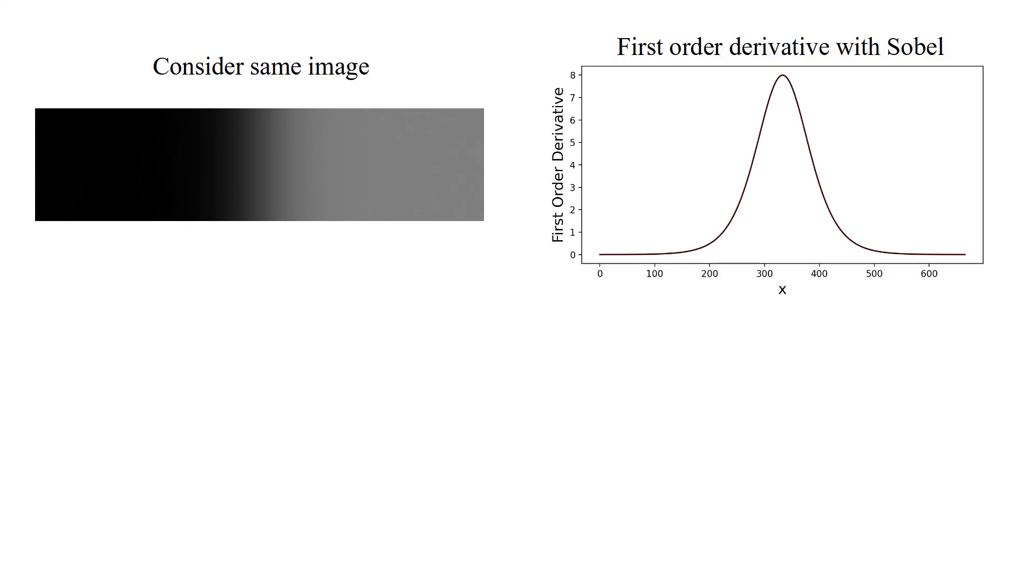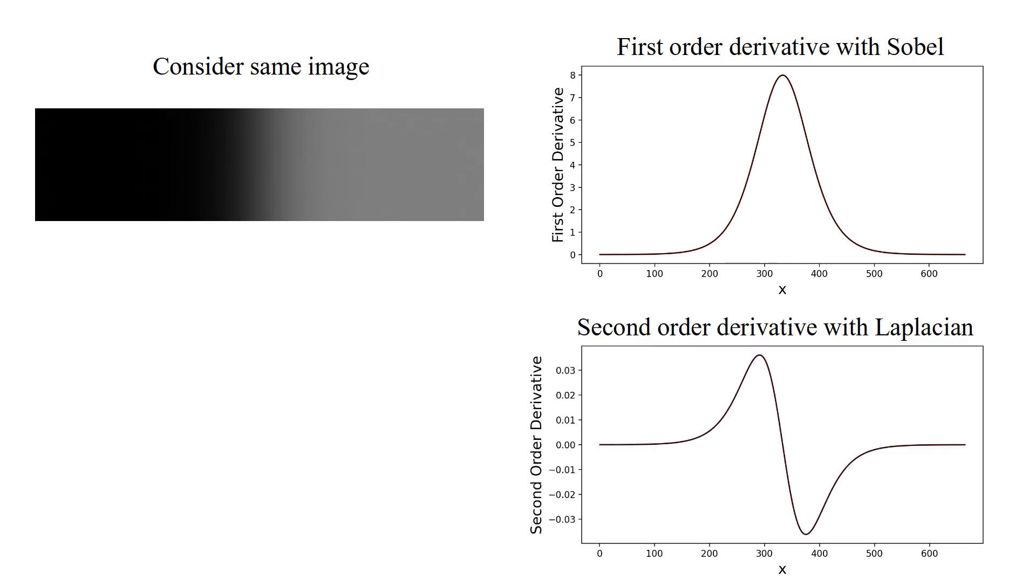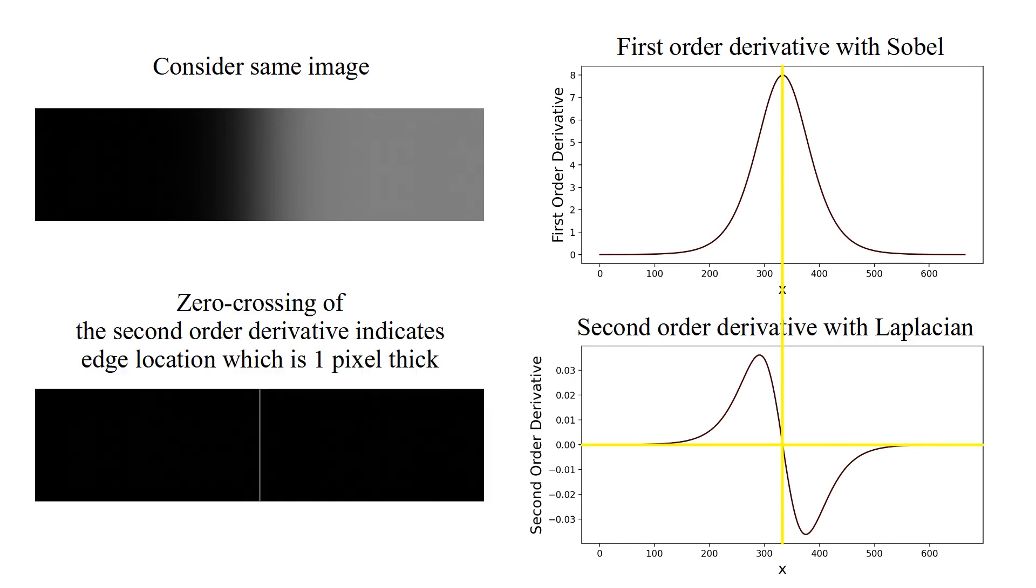Consider same image. This is first-order derivative computed using Sobel. And this one is second-order derivative computed using Laplacian. Zero crossing of Laplacian result corresponds to the peak of first-order derivative as expected. Zero crossing of the second-order derivative indicates edge location which is one pixel thick.